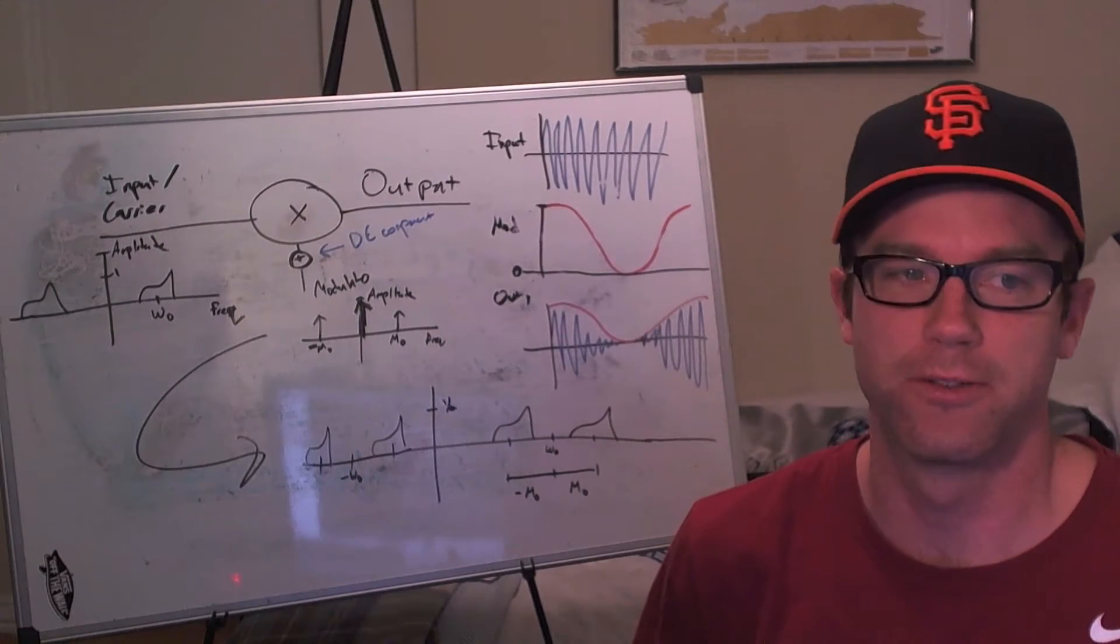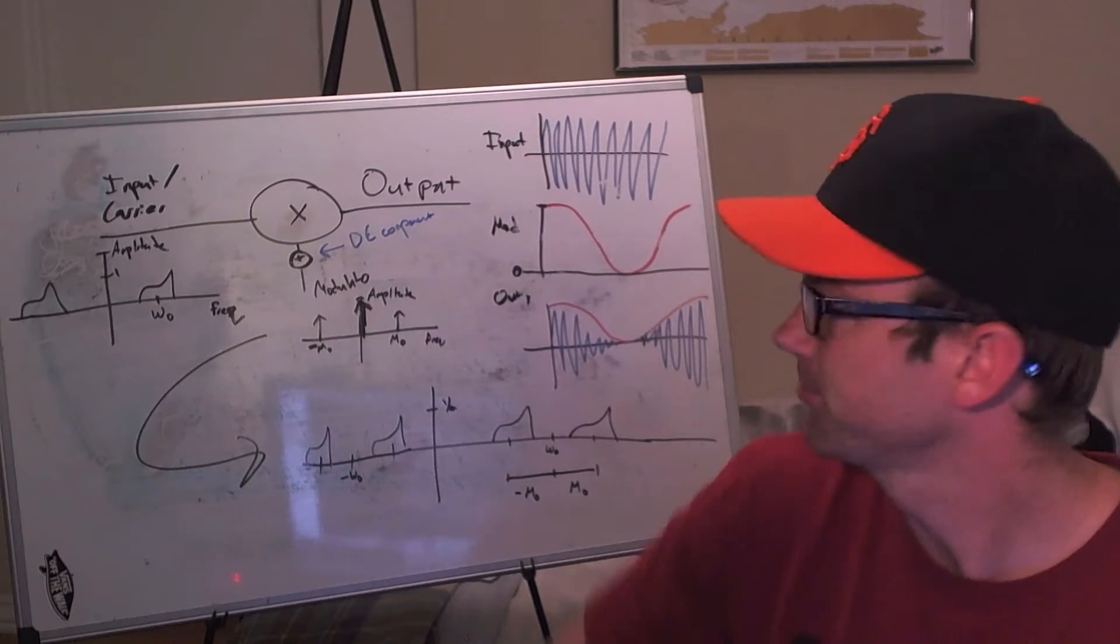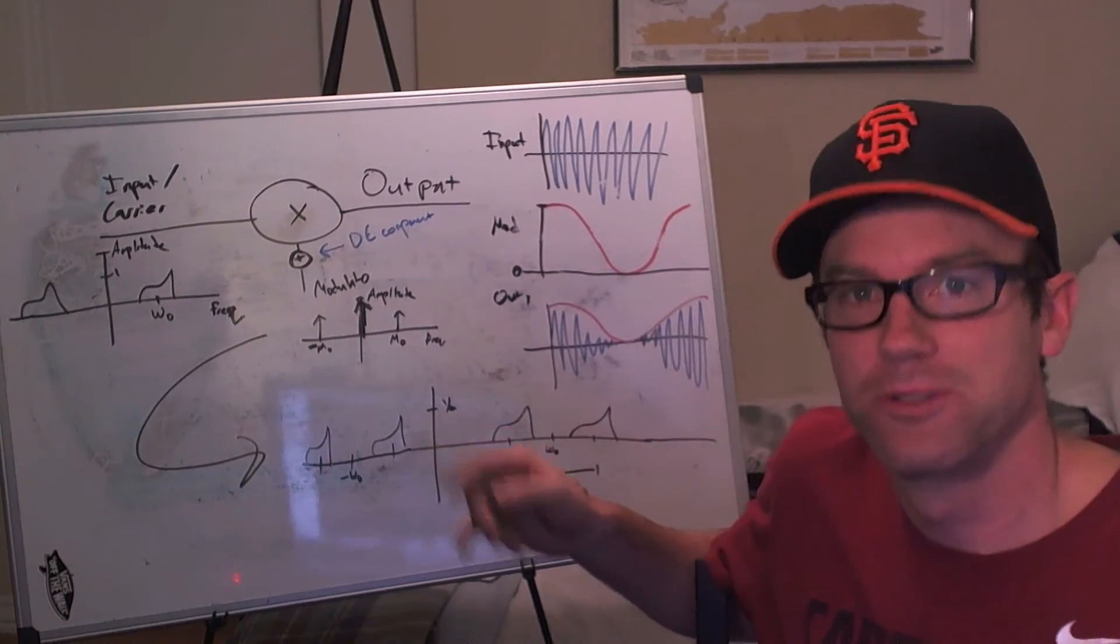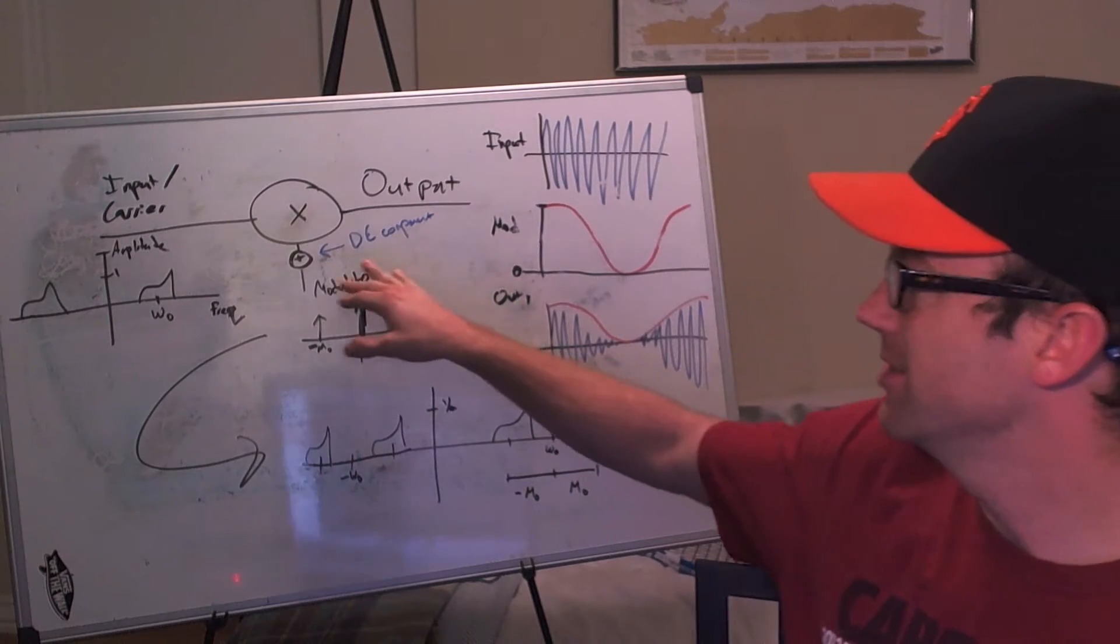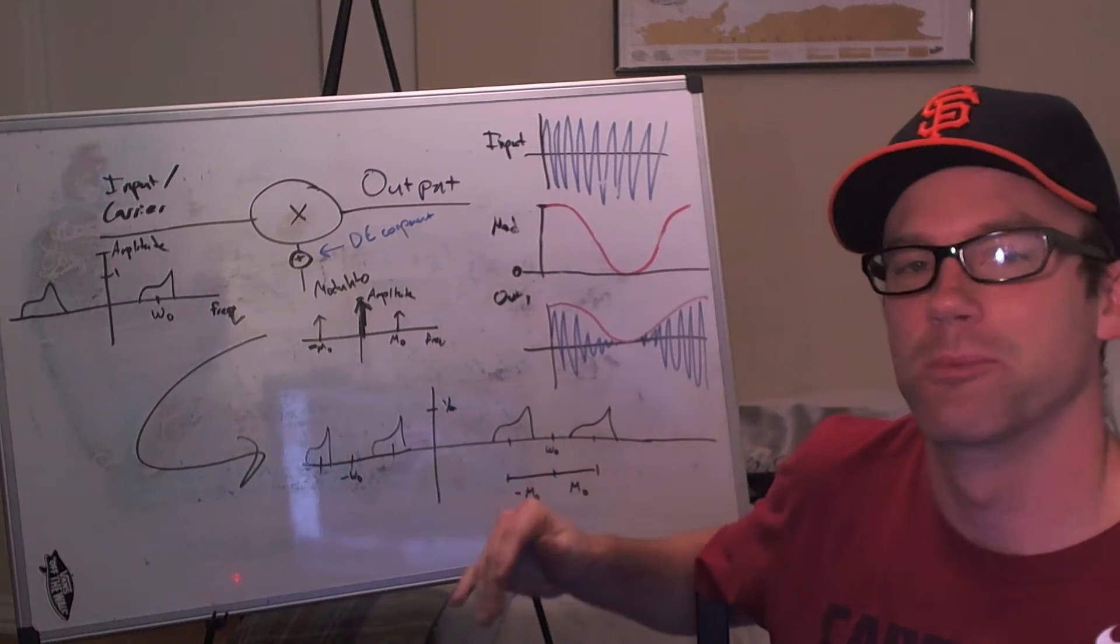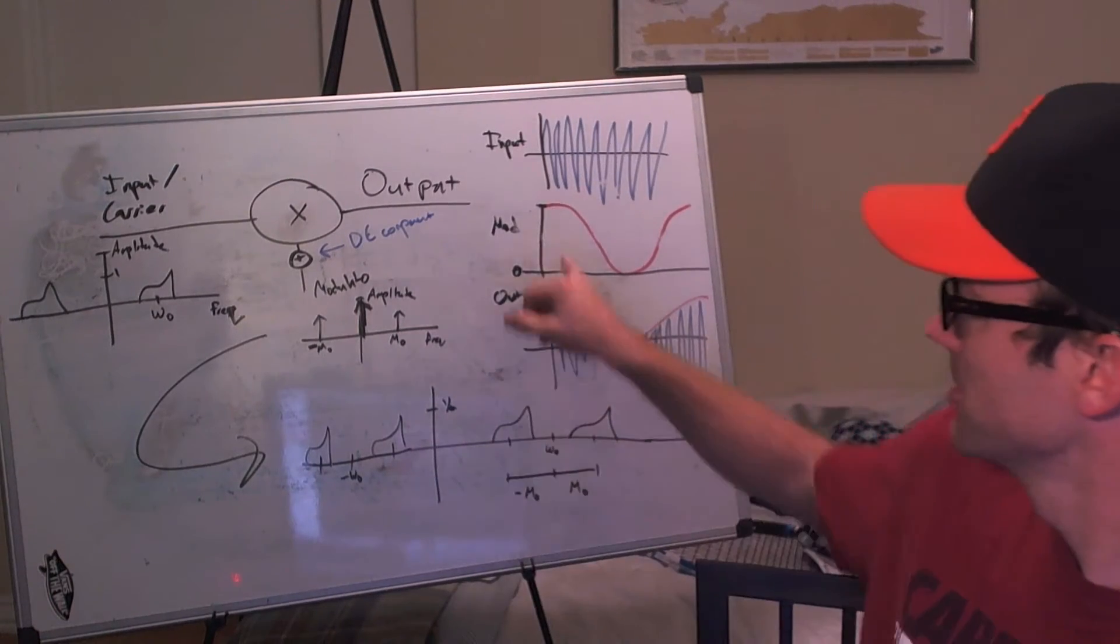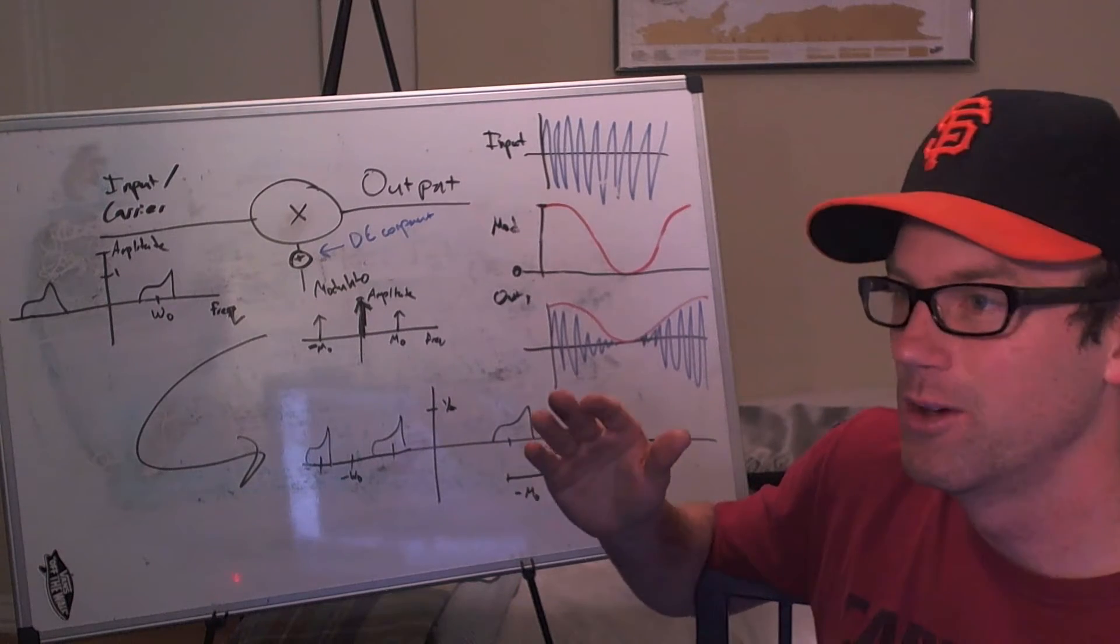All right, so what is the difference between ring modulation and amplitude modulation? I've updated our picture to reflect amplitude modulation, and the only difference is this DC component. So we add a DC component to the modulating signal.